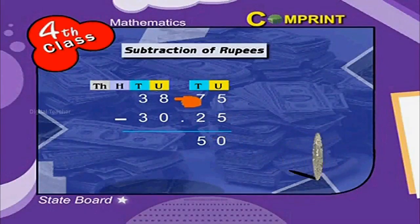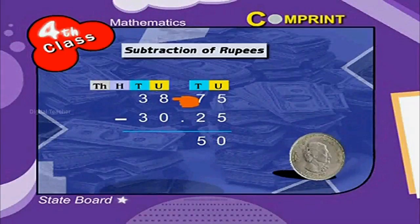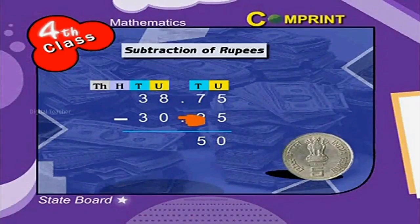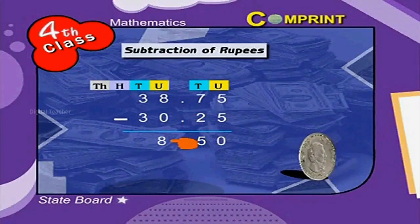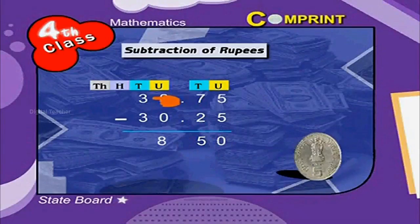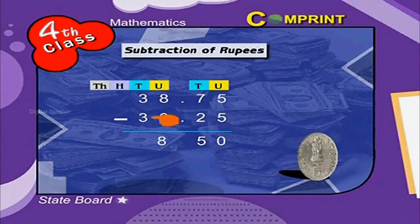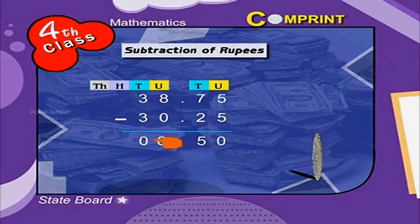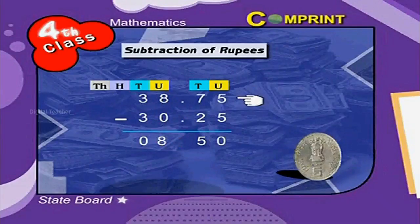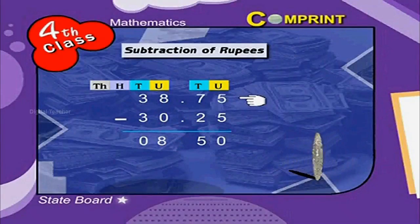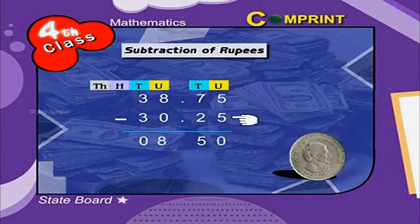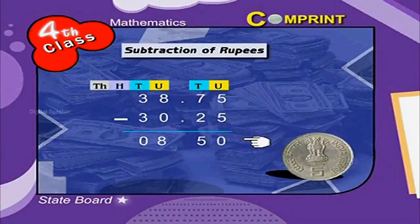Now subtract the units place of rupees: 8 minus 0 is equal to 8. Finally, subtract the tens place of rupees: 3 minus 3 is equal to 0. Thus, 38 rupees 75 paisae minus 30 rupees 25 paisae is equal to 8 rupees 50 paisae.